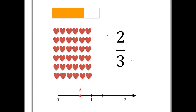What does two-thirds mean? Well, it means that you have taken something, some whole unit, divided it into three equal pieces and taken two of them. So in this rectangle, we can see that, right?